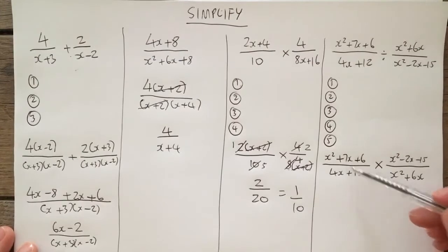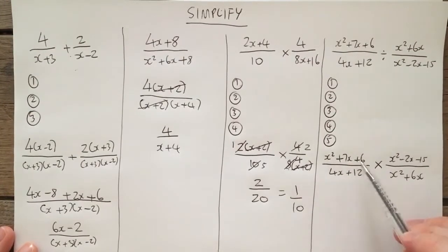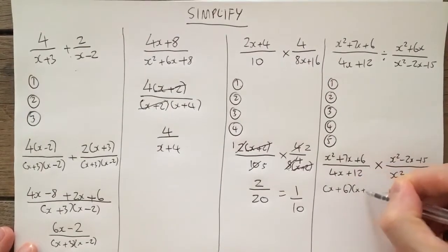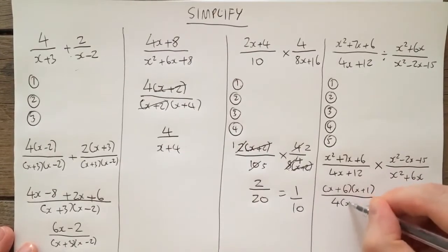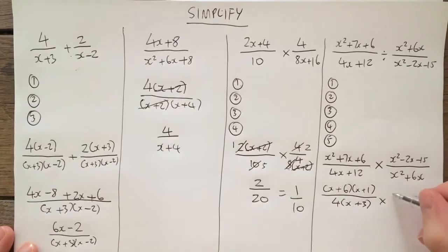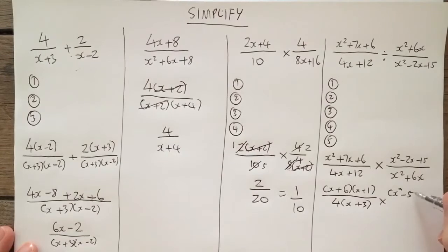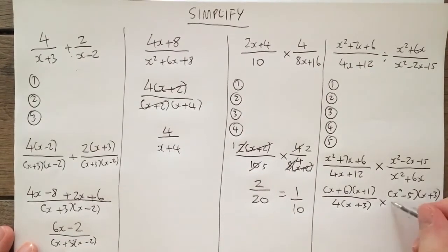My second step, can I factorize? Well, the answer is yes, I can factorize all of them. Let's look at this one here. Two numbers that multiply to get 6 add to get 7. So I've got x plus 6x plus 1 over linear factorization here. 4 bracket x plus 3 times by, factorize that, x.